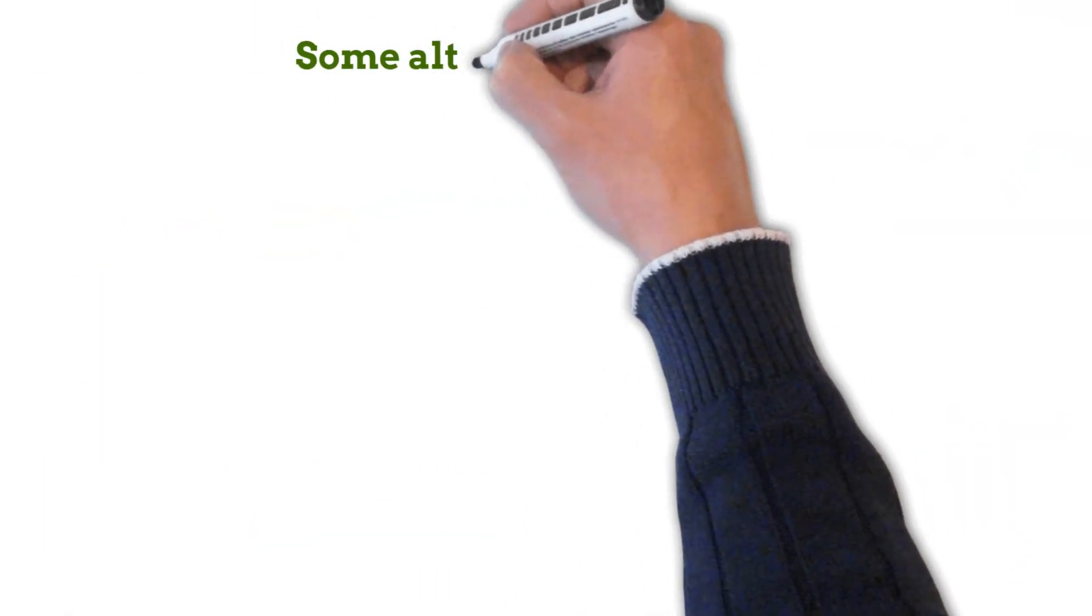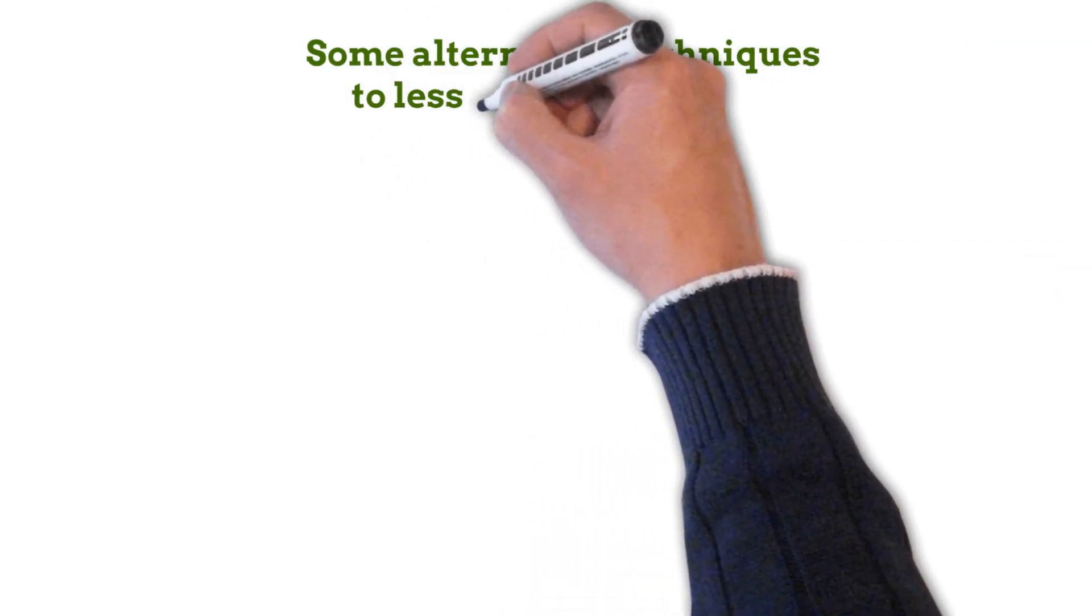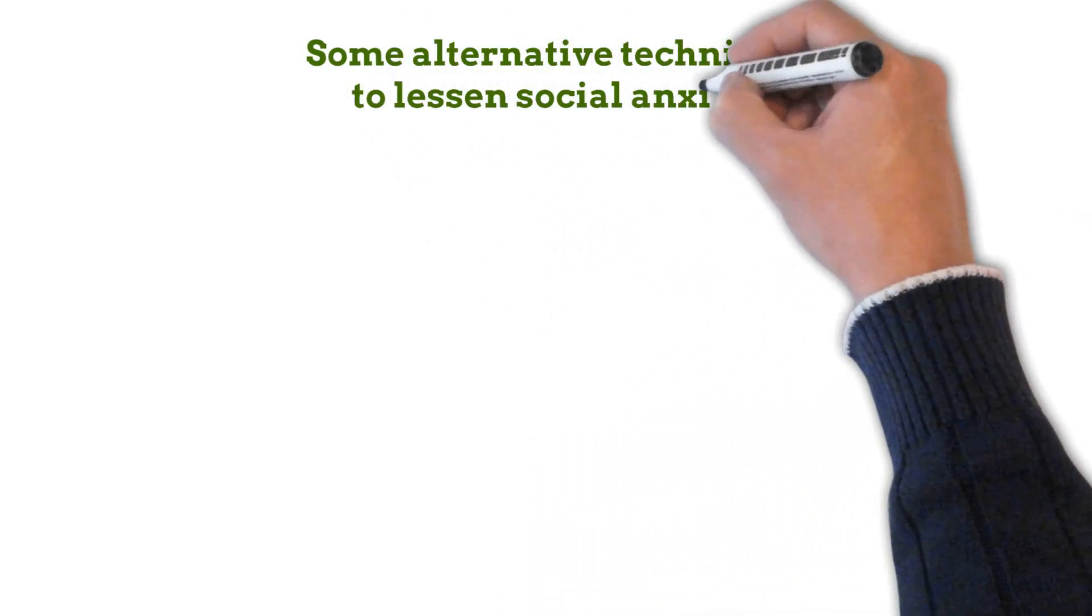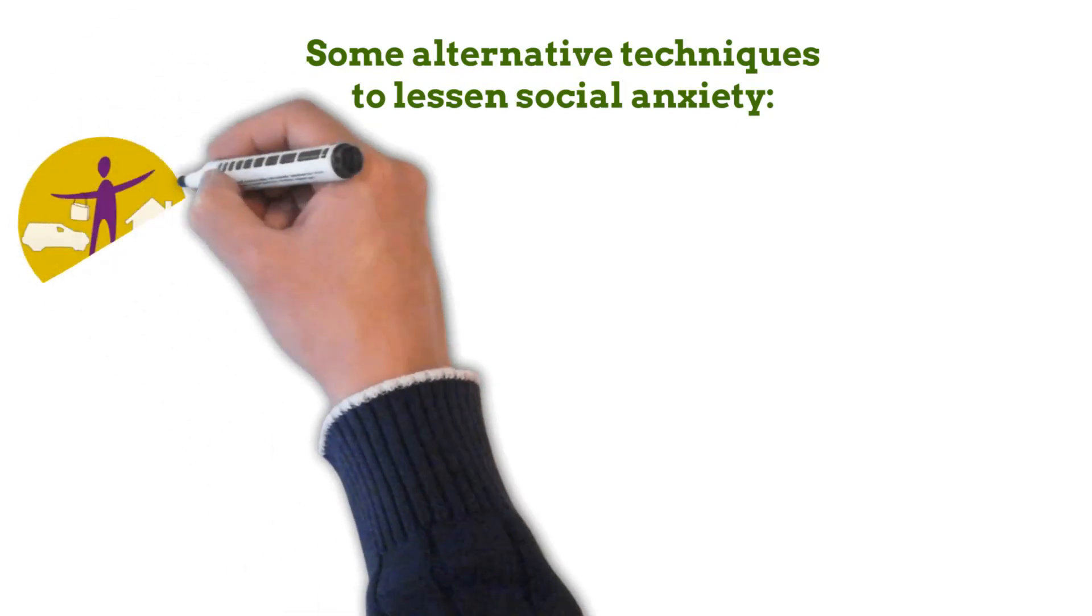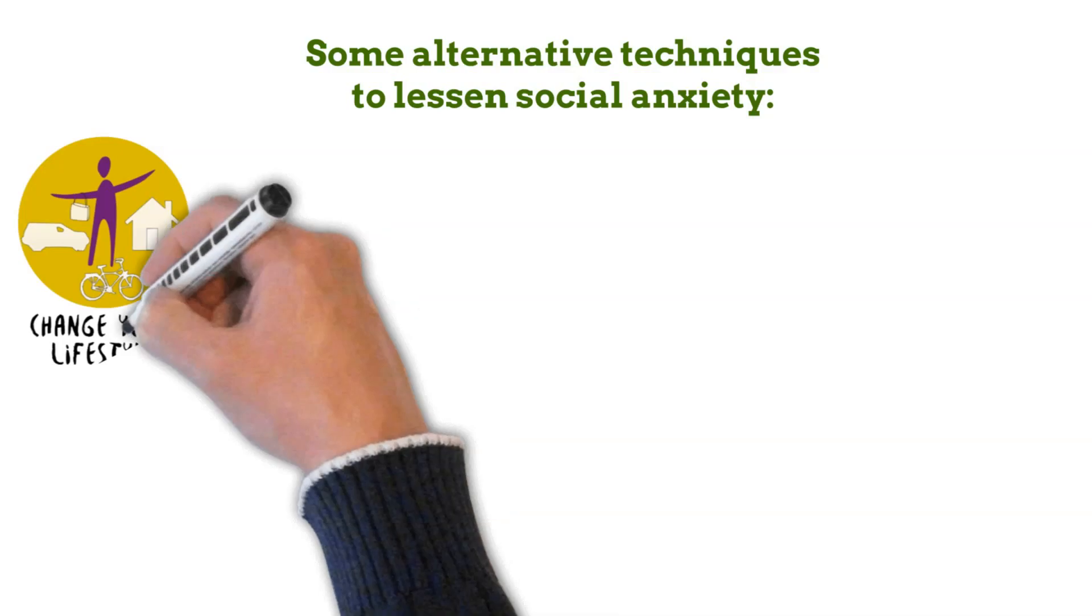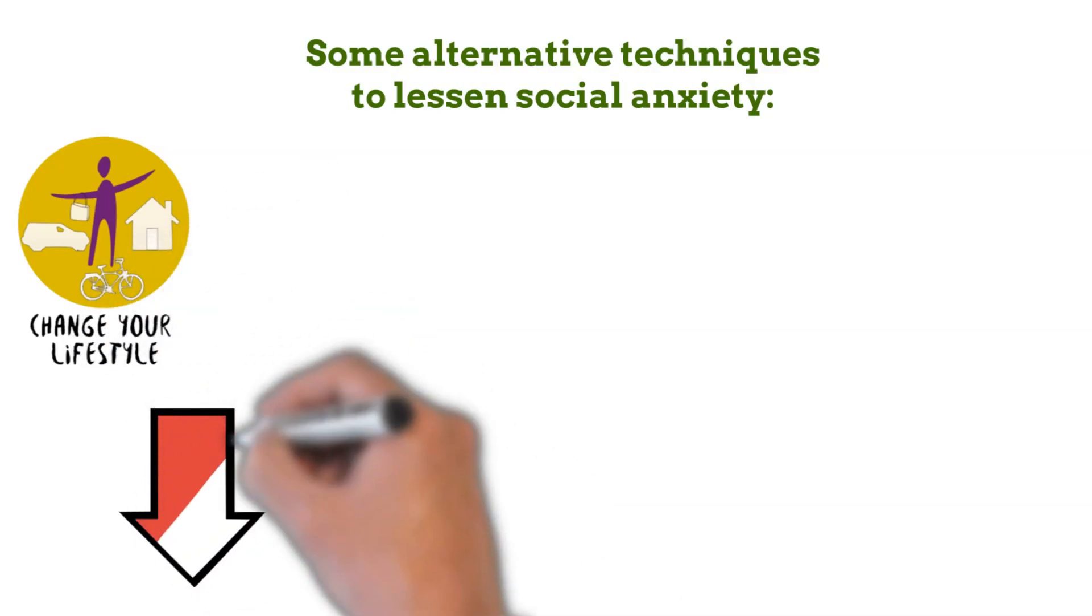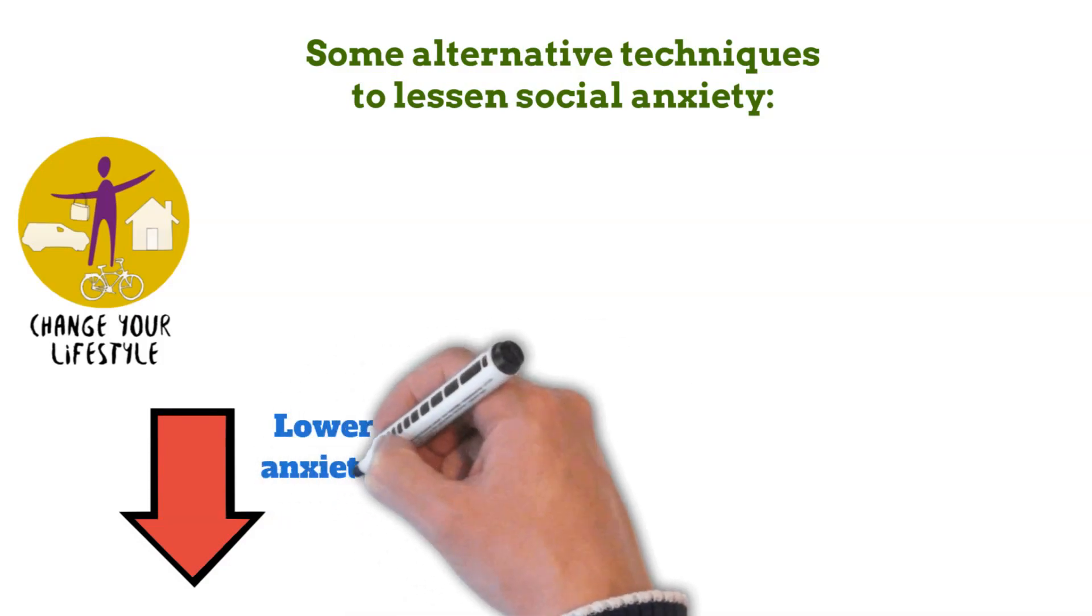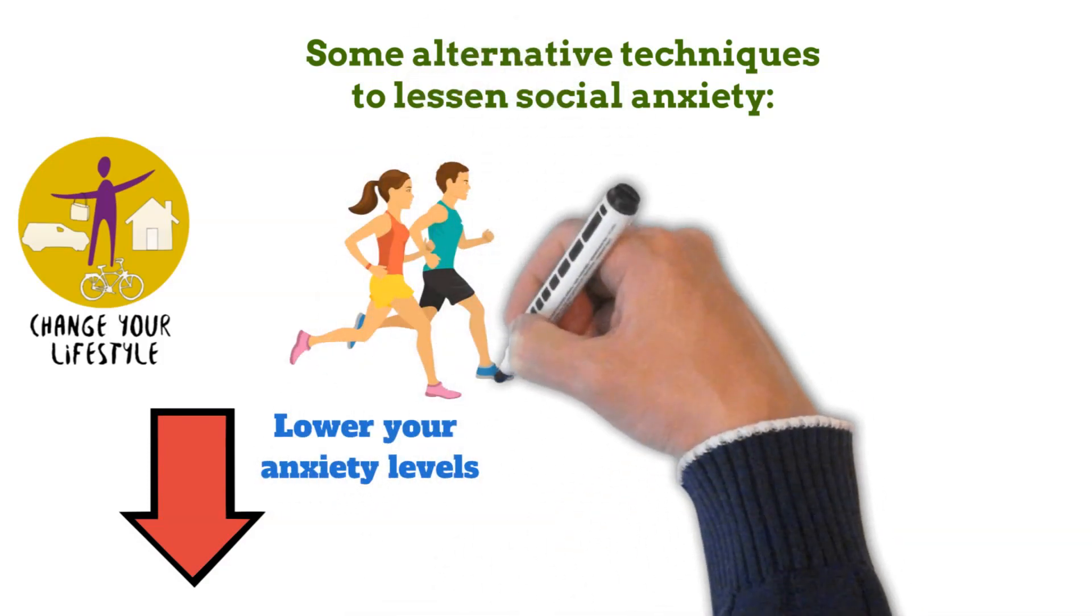If your social anxiety isn't too bad, you can try alternative techniques instead of more conventional ones to lessen your anxiety while you're with people. Changes to one's way of life may also reduce anxiety in general. Your ability to function in social situations may improve if you lower your anxiety level. One change you can make is to start exercising regularly.